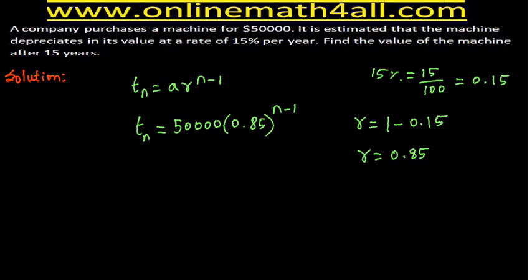Our next question is: what does n stand for? If I plug n = 1, that gives the cost of the machine at the first year. If I plug n = 20, the value we get will give the value of the machine at the beginning of the 20th year. So plugging any value of n gives the value of the machine at the beginning of that particular year.